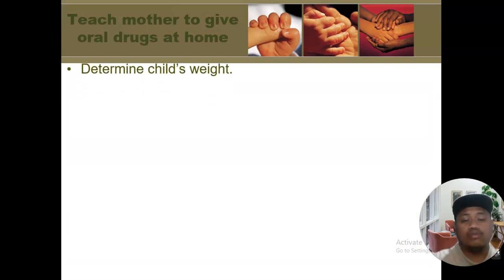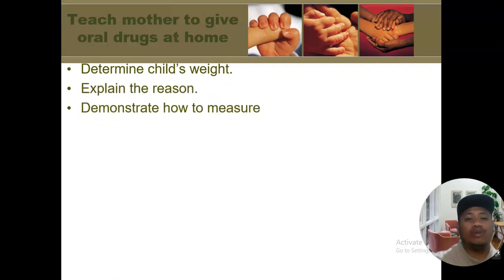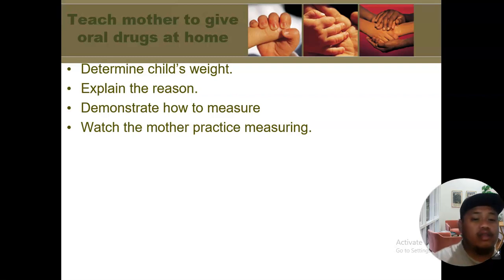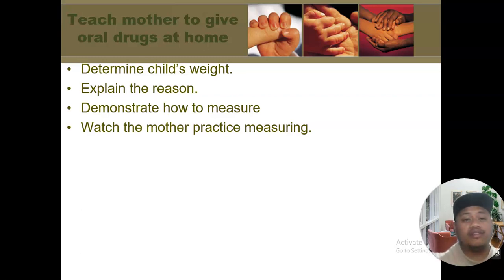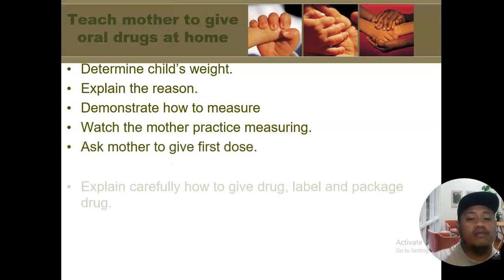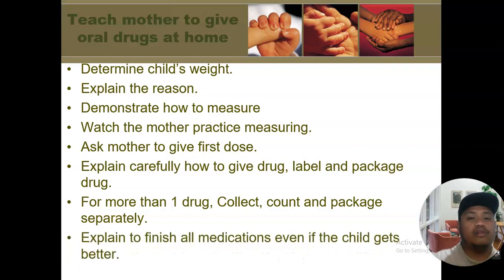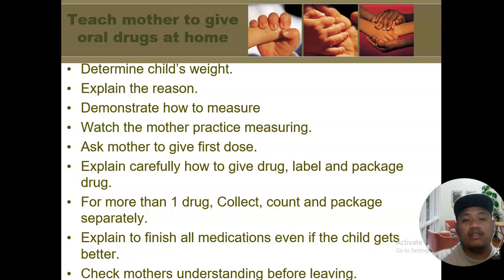For giving oral drugs, teach the mother: help her determine the child's weight; explain why the antibiotic is needed; demonstrate how to measure using household measurements — for example, 5 ml equals one teaspoon and 15 ml equals one tablespoon. Observe the mother giving the first dose to confirm understanding. For more than one drug, count and package separately. Explain the importance of completing the full course of medication to prevent antibiotic resistance. Check the mother's understanding before leaving by asking questions.